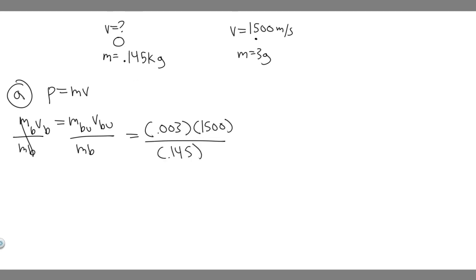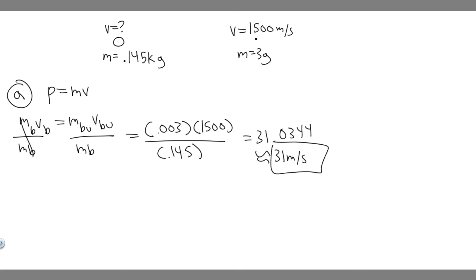Go ahead and plug this into your calculator: 1,500 times 0.003, then divide by 0.145. When you do this, you get 31.0344 and so on — you can round to 31. Keep in mind we measure velocity in meters per second, so 31 meters per second is your answer to Part A.